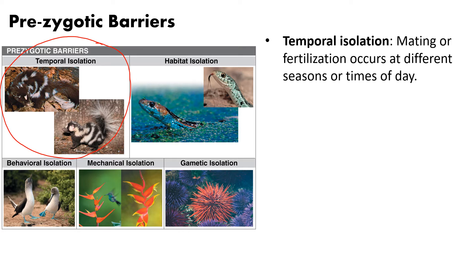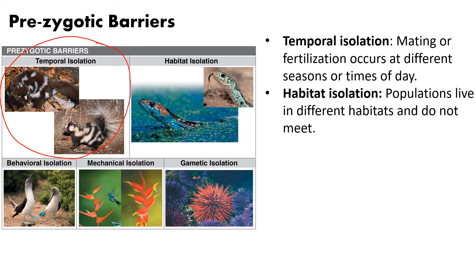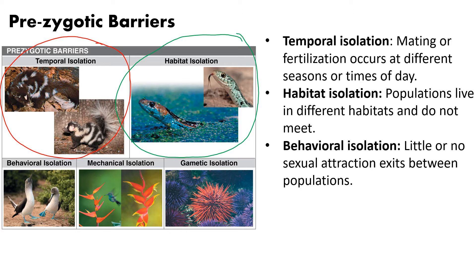Two different species of skunks exemplify temporal isolation — one mates in the spring, the other in the fall. Because females and males are not in reproductive status at the same time, they will not interbreed and are therefore two different species. The next type is habitat isolation, illustrated by garter snakes: one species lives in water and another on land. Even though they can live close to each other, because one group stays in water and the other on land, they will not encounter each other and mate.